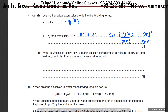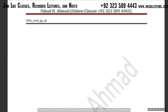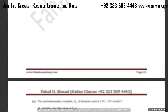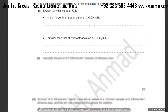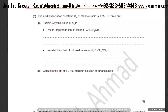Now calculate the pH of ethanoic acid. Let's directly use the formula: Ka = [H⁺]² / [acid]. Ka = 1.75 × 10⁻⁵ is already given. The acid concentration is 0.1 mol dm⁻³.